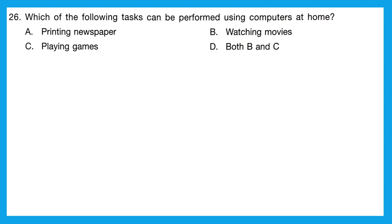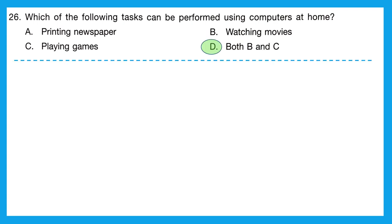Question 26: which of the following tasks can be performed using a computer at home? A — printing newspaper, B — watching movies, C — playing games, or D — both B and C. We can watch movies and play games on a computer at home. So the correct option is D, both B and C.